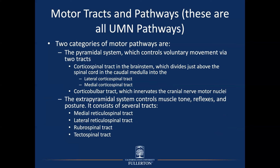So we're going to be looking at motor tracts and pathways. These are all upper motor neuron pathways shown on this particular slide. The two categories of motor pathways are the pyramidal system, which controls voluntary movement, and the extrapyramidal system, which controls muscle tone, reflexes, and posture. Looking at the pyramidal system, we can break it down and give more names.